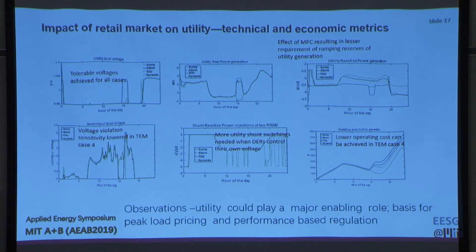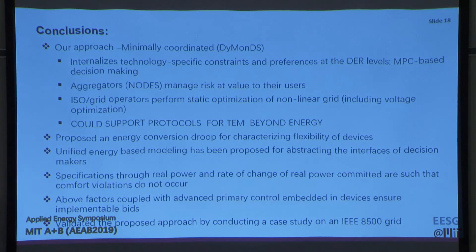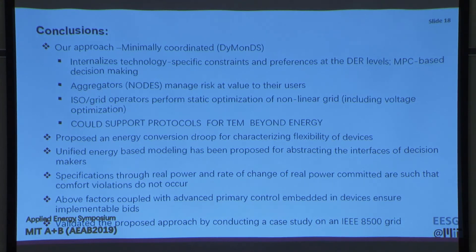A downside is that device-level decision making may cause voltage control devices to operate more frequently in the dynamic pricing case. However, the cumulative operation cost, shown in green, has been reduced by a large extent. The major observation is that the utility can play a major role, forming the basis for peak load pricing or other performance-based regulations. In conclusion, our approach is based on a minimally coordinated decision framework where uncertainty and decision making are embedded at the devices, with only minimal information used for clearing at the system level, and a simplified modeling framework makes this scalable.